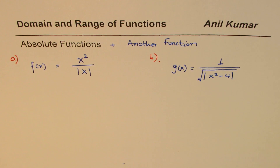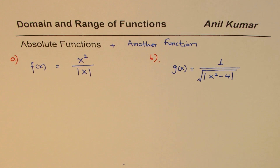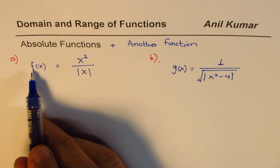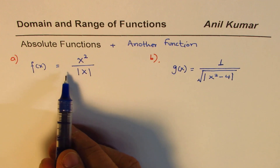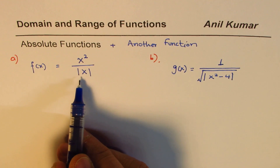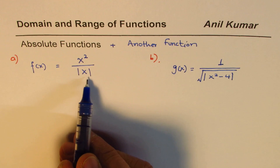You can at any time pause the video, write down your solution, and then look into my suggestions. Let's begin with the very first one, which is f(x) equals x squared divided by absolute x.